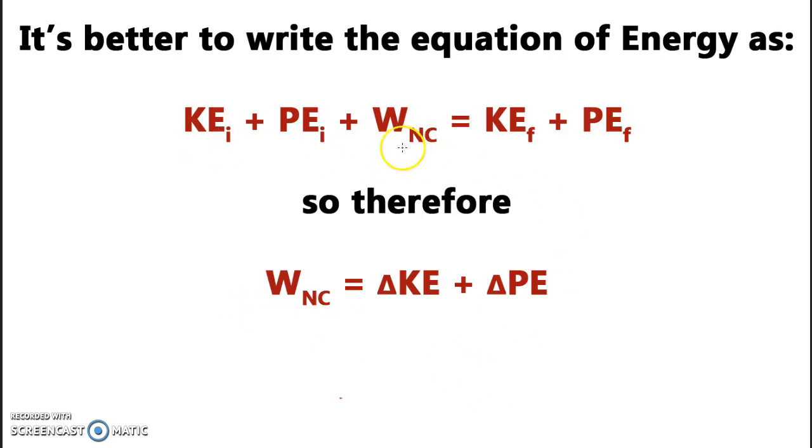If I've got this equation where my non-conservative forces, my frictional forces, are added at the beginning there, I must remember that this value here must be negative. It's negative because it steals the energy. That's really why. It steals the energy, so it has to be negative.